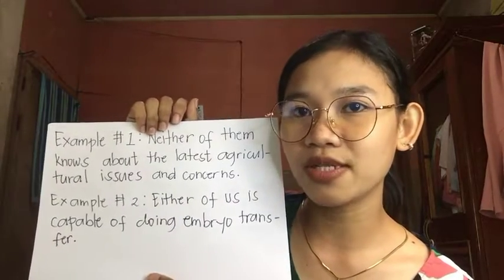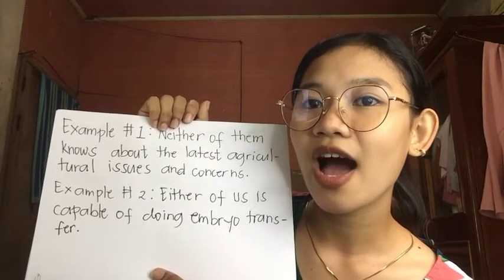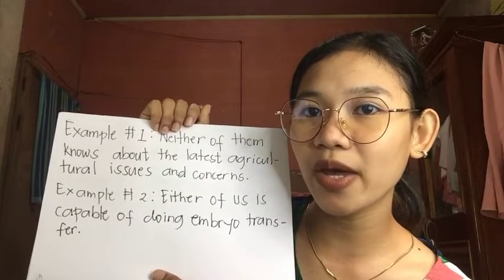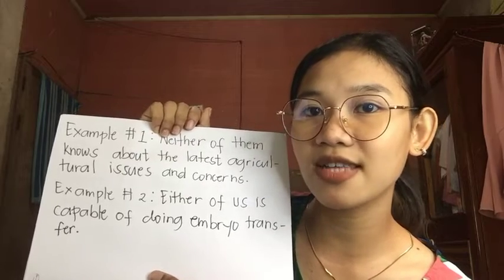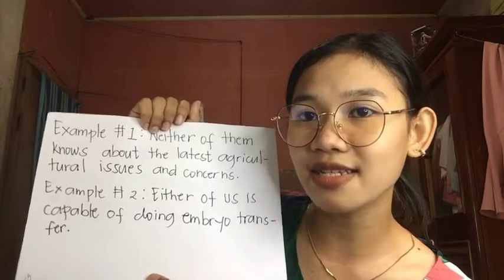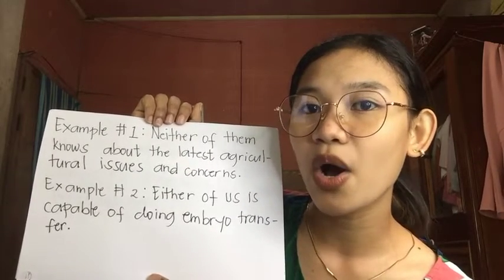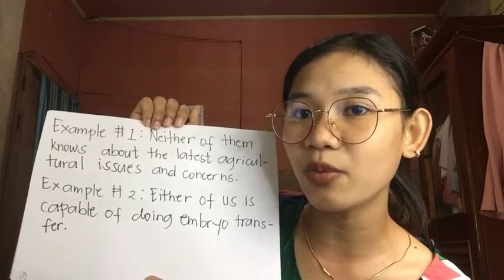Rule number eleven: when 'either' and 'neither' are subjects without 'or' and 'nor,' a singular verb is required even if they seem to be referring to more than one thing. Example: 'Neither of them knows about the latest agriculture issues and concerns.' Second: 'Either of us is capable of doing embryo transfer.' In the first example we use the singular verb 'knows,' and in the second example we use the singular verb 'is,' even though both refer to more than one person.